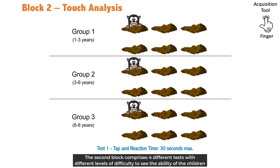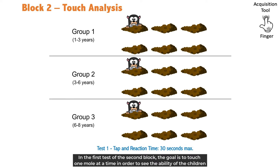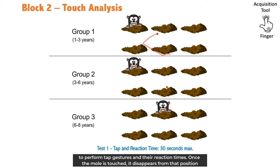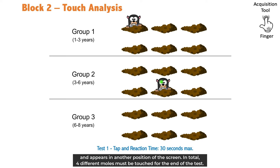The second block comprises four different tests with different levels of difficulty to see the ability of the children to perform different hand gestures and movements, with a maximum time of 30 seconds to complete each one. In the first test of the second block, the goal is to touch one mole at a time in order to see the ability of the children to perform tap gestures and their reaction times. Once the mole is touched, it disappears from that position and appears in another position of the screen. In total, four different moles must be touched for the end of the test.